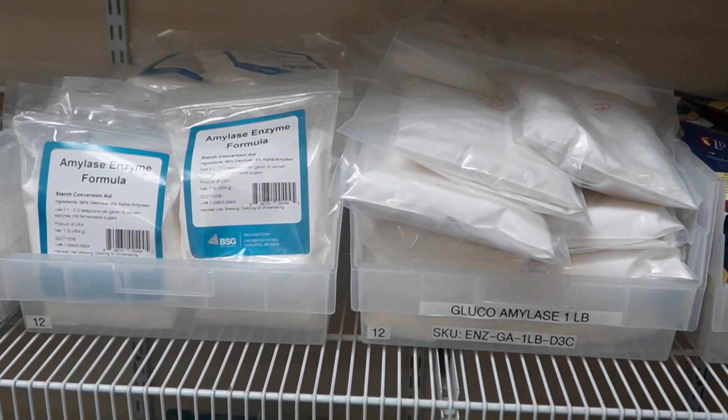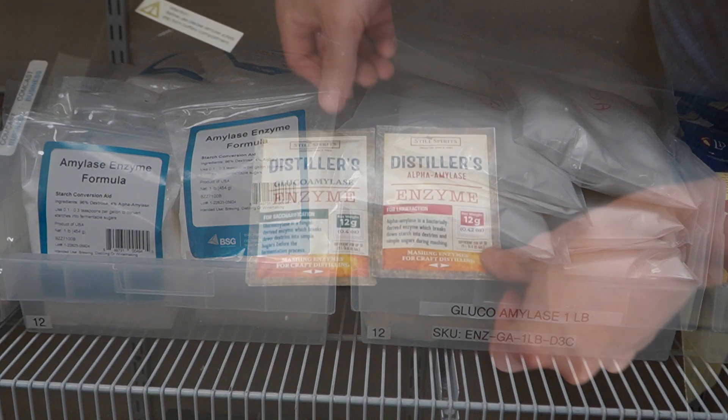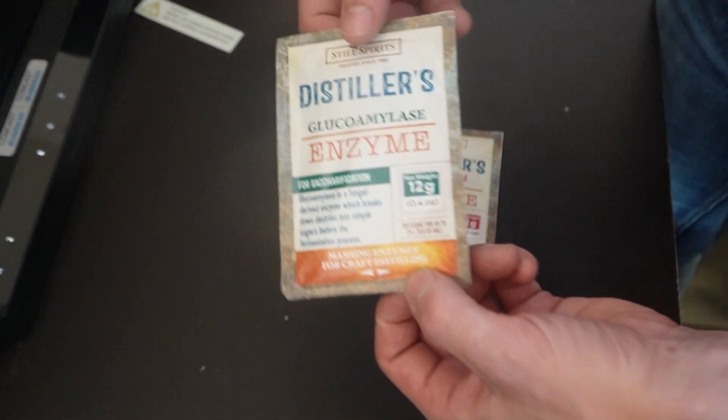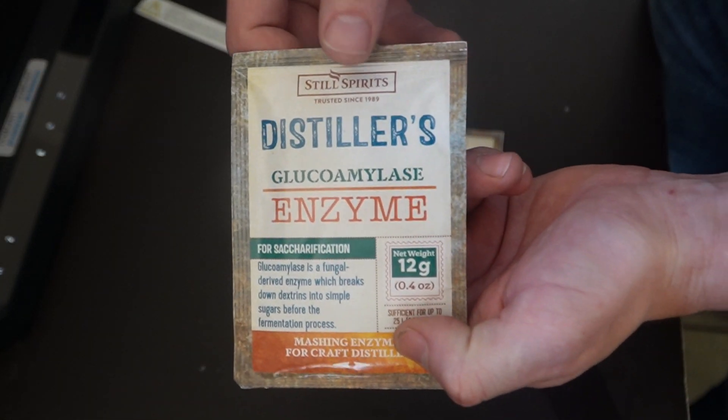Not really a lesser known distilling ingredient, but let's talk about them since they're so important. Enzymes convert starches to sugars. This is important in ingredients that include but are not limited to potatoes, bananas, corn, and more.